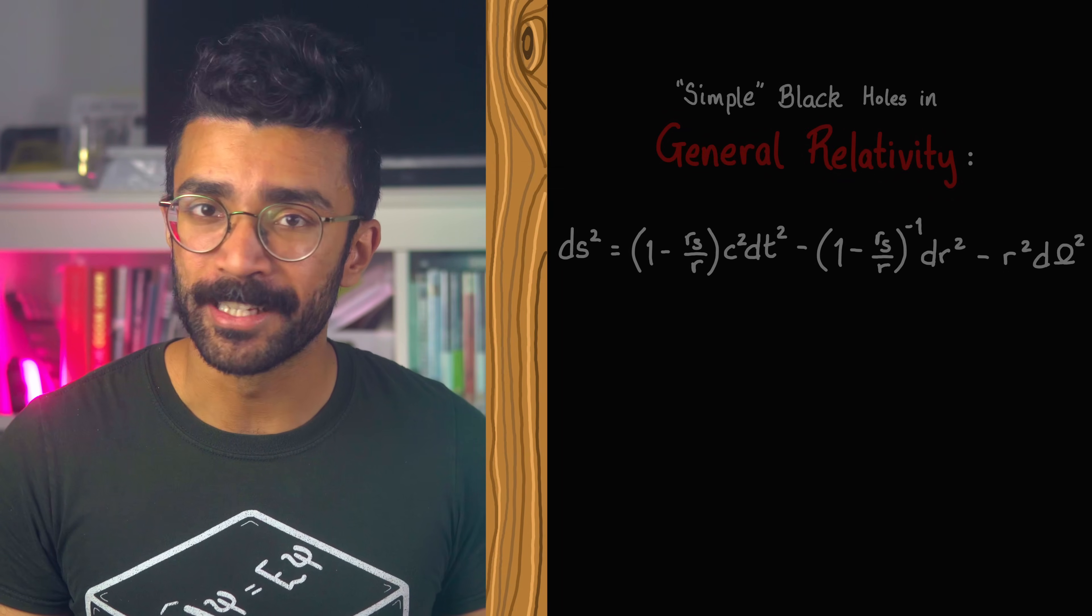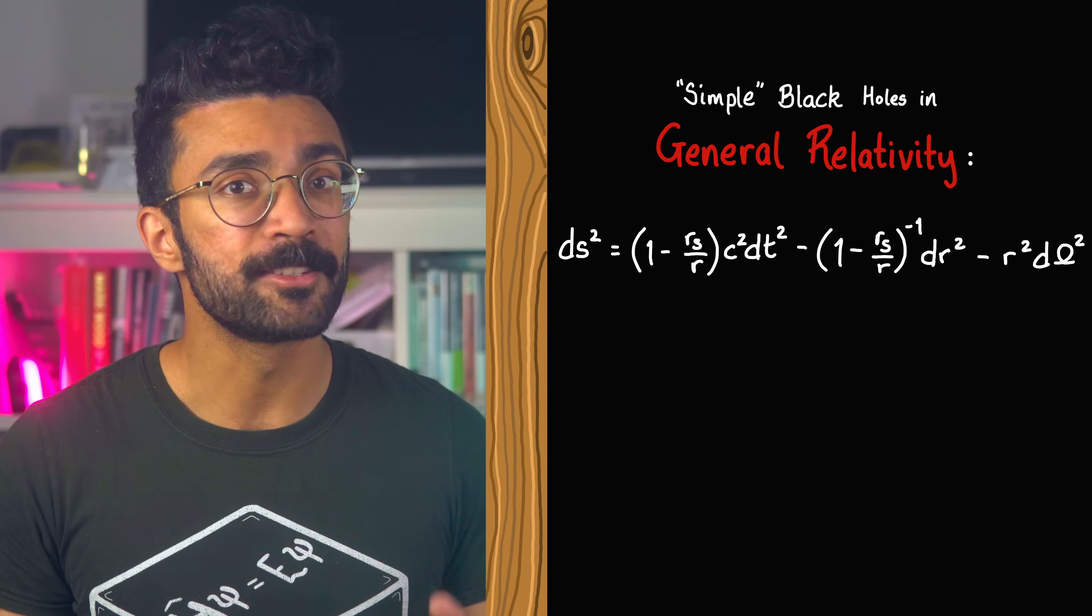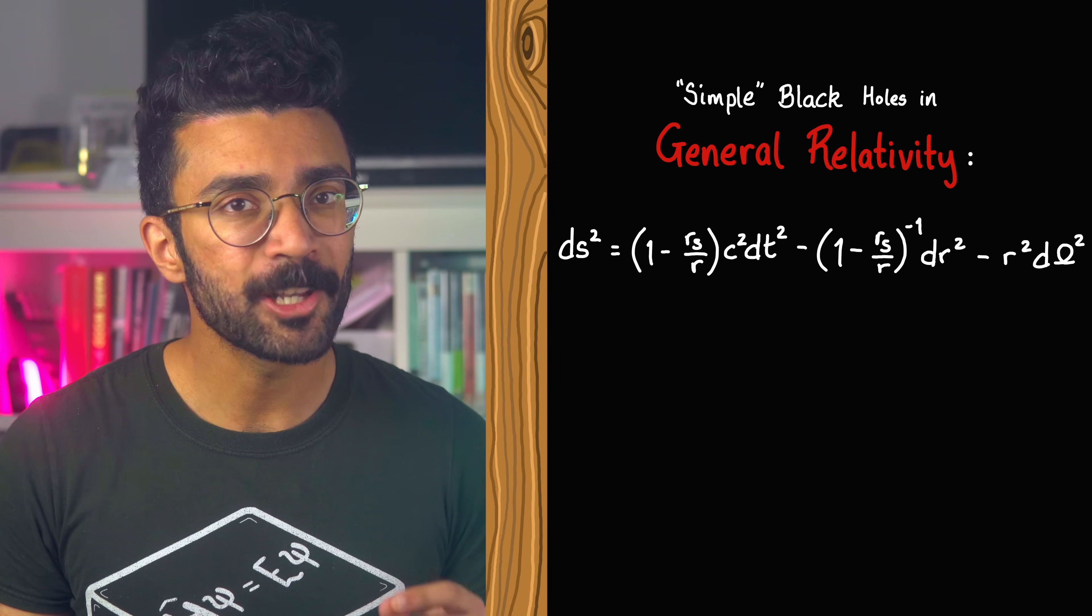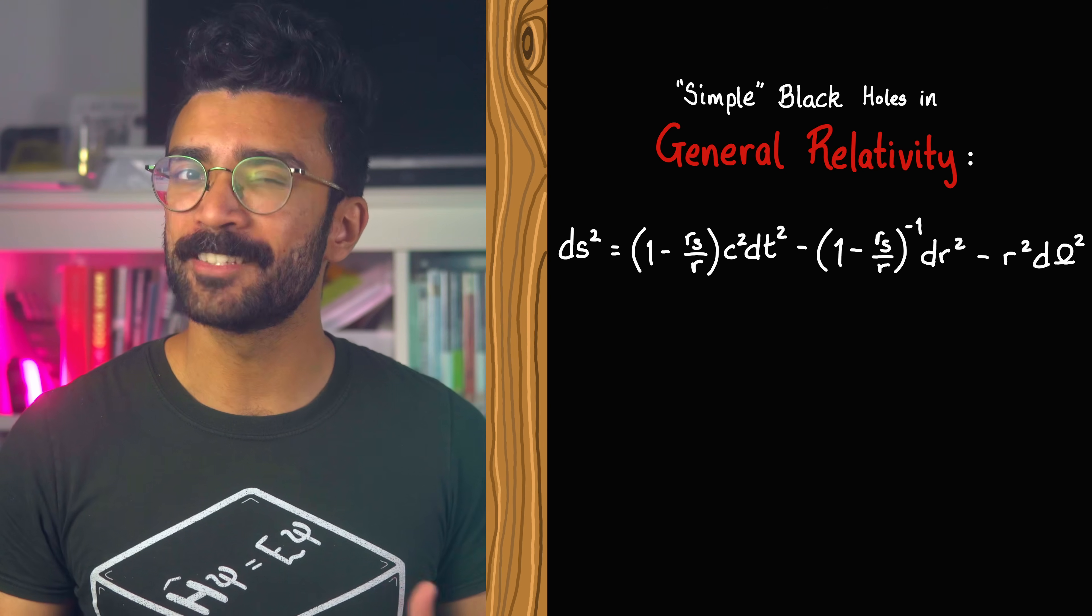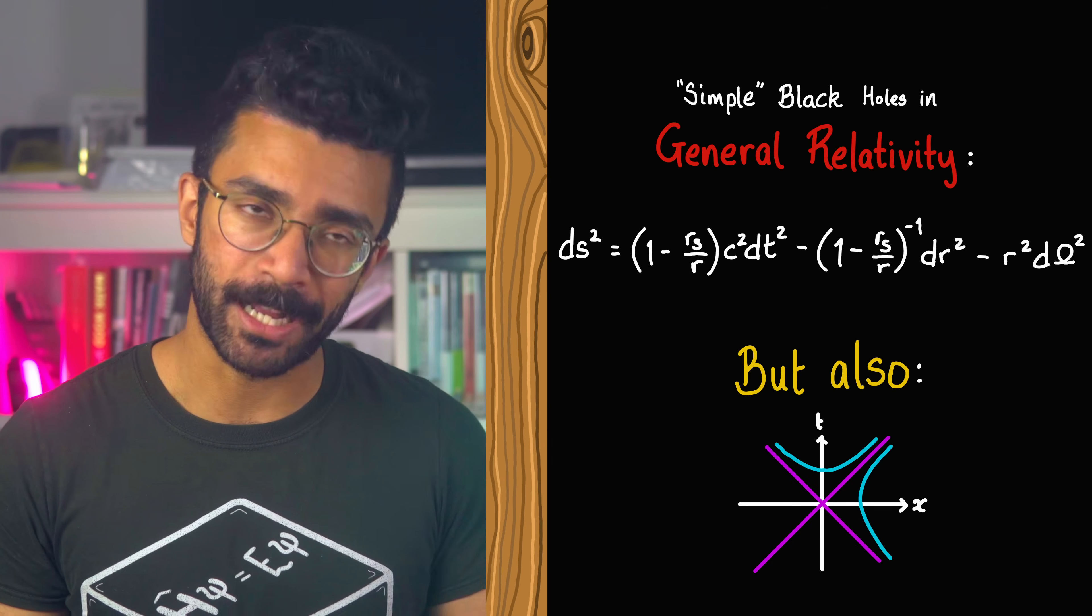Now I did mention at the start of the video that we'll be using a simple diagram to understand what happens when someone falls into the event horizon of a black hole. And this is the cool thing about relativity. The math is super complicated, but we can get a lot of physical intuition from fairly simple diagrams that we can draw on the back of an envelope.